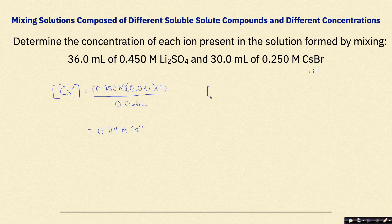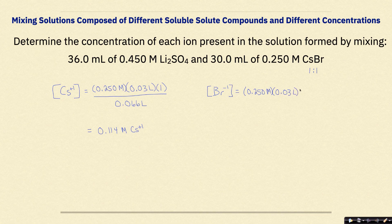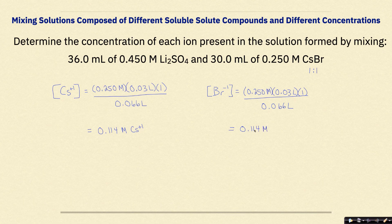For the bromide ions Br⁻, the setup is the exact same as for Cs⁺. You need to show — either by doing the calculation again or writing a complete explanation — why the two setups are the same. Because cesium and bromine are in a 1 to 1 ratio, we get the same concentration value: 0.114 molar for both Cs⁺ and Br⁻.